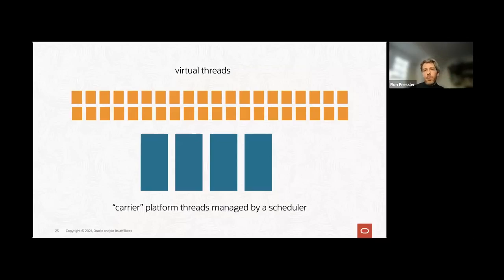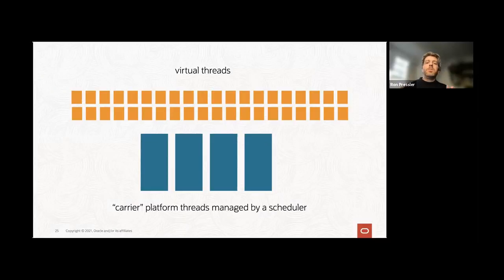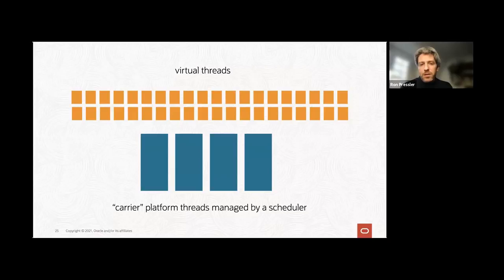From the perspective of a Java program, you can create an unlimited number — a million virtual threads. Don't worry about it; the cost of creating one is the same as creating a String. What the operating system sees is all those virtual threads scheduled onto a very small set of platform threads, which carry the virtual threads on top of them. All of that is done behind the scenes.